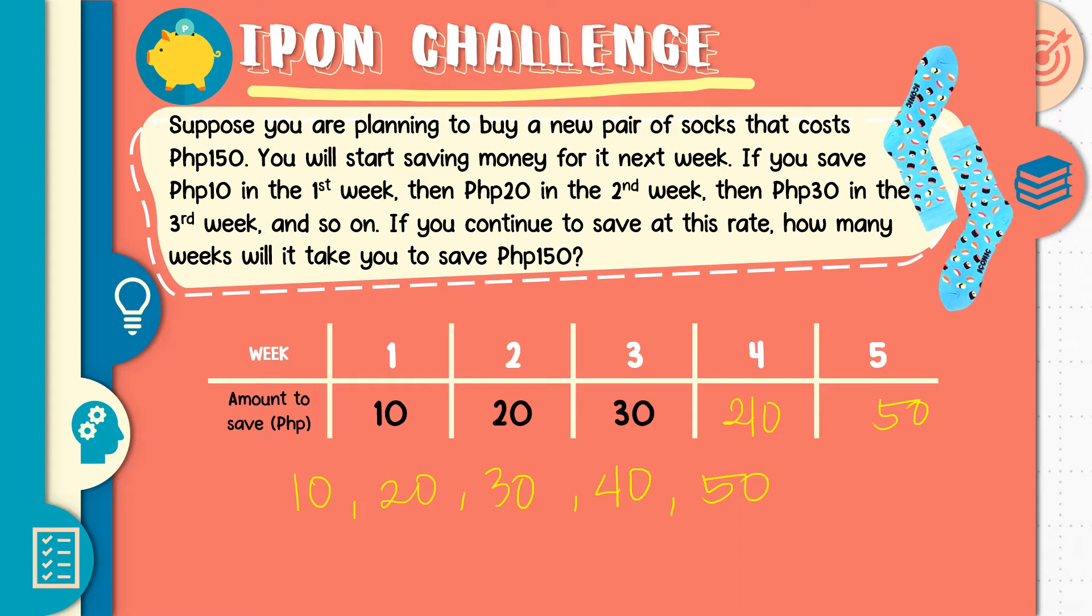Ma'am, paano po siya naging sequence? Note that sequence is a list of numbers with specific pattern or order and arrangement. Pag sinabing specific order or arrangement, si 20 hindi pwedeng mapunta dito. Si 30 hindi pwedeng mapunta dito or exactly hindi siya pwedeng magkagulo-gulo. Kasi mawawala na yung pattern mo. So meron siyang specific order and this is the first term, the second term, the third term, the fourth term, and the fifth term.